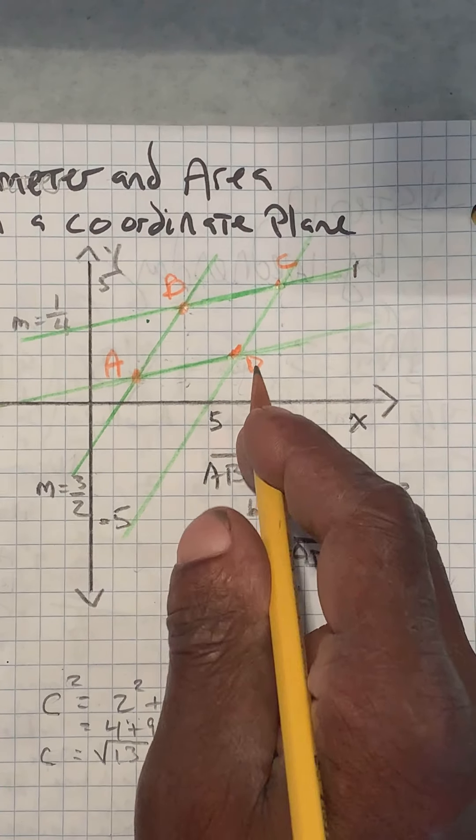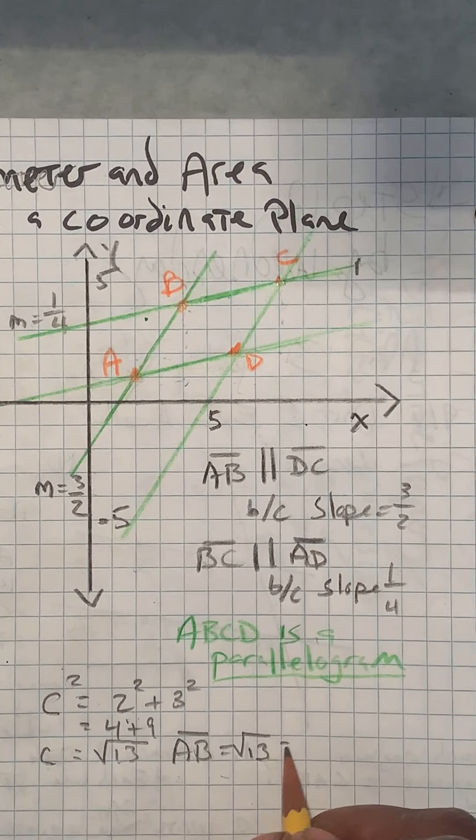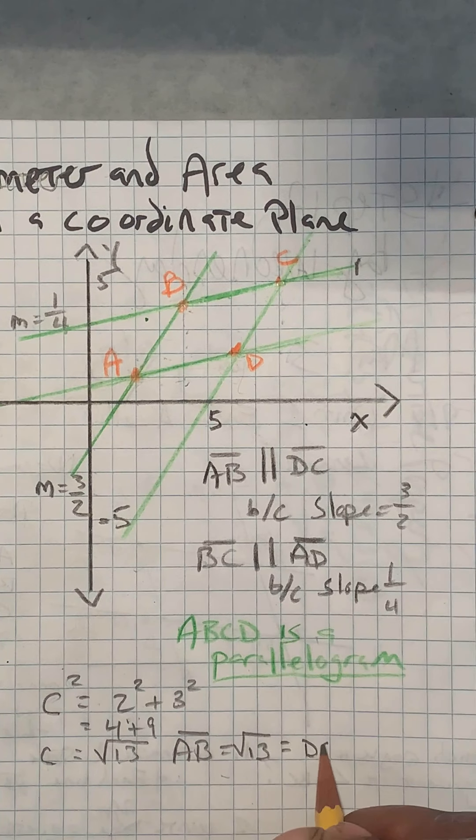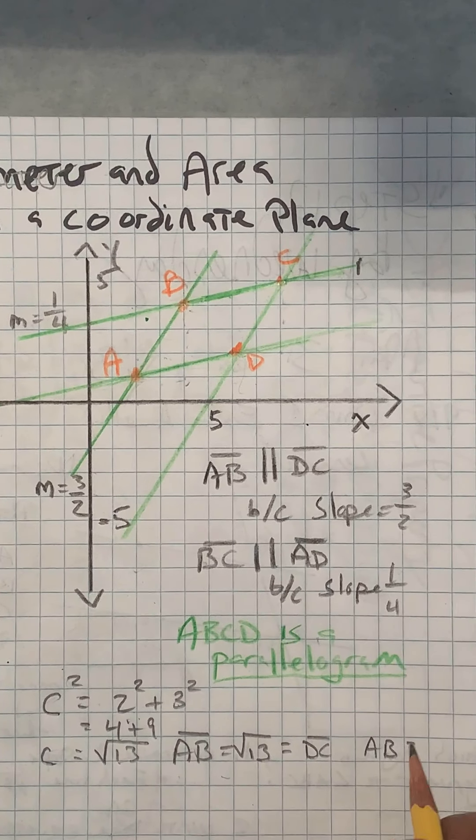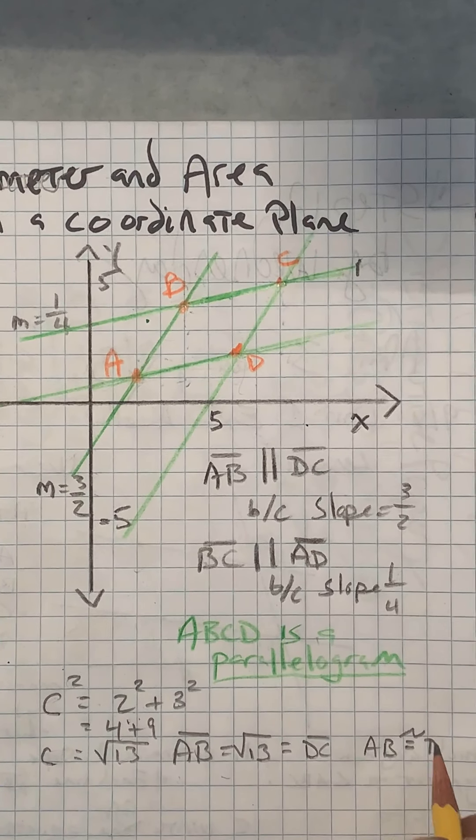So it's still going to be 2 squared plus 3 squared. It's going to be the square root of 13. So we now know that DC and AB have the same measure. AB is congruent to DC.